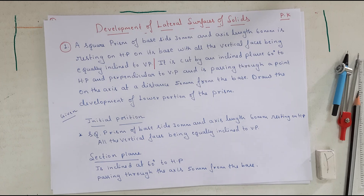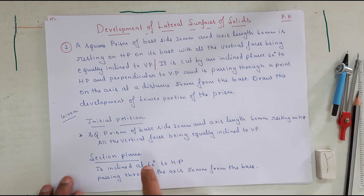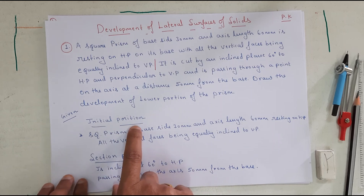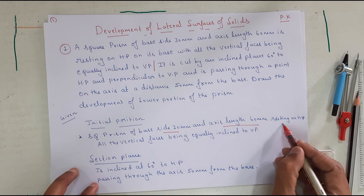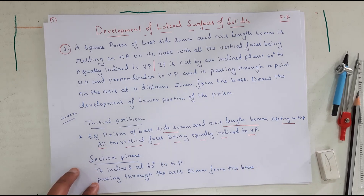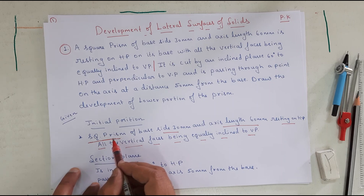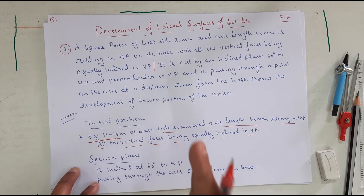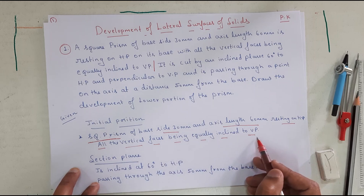Hello friends, namaste. From today onwards we are going to solve problems related to development of lateral surfaces of solids. The given problem is a square prism of side 30 mm and axis length 60 mm, resting on HP such that all vertical faces are equally inclined to VP. The solid is a square prism, so it comes under the parallel line method.